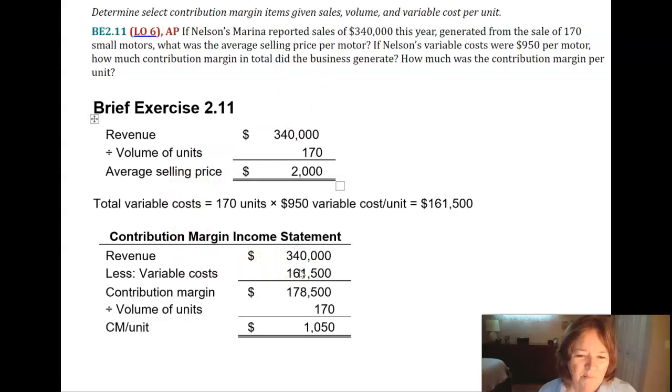We sold 170 units, and our variable cost per unit is $950 per unit. So that's $161,500 in total variable cost.